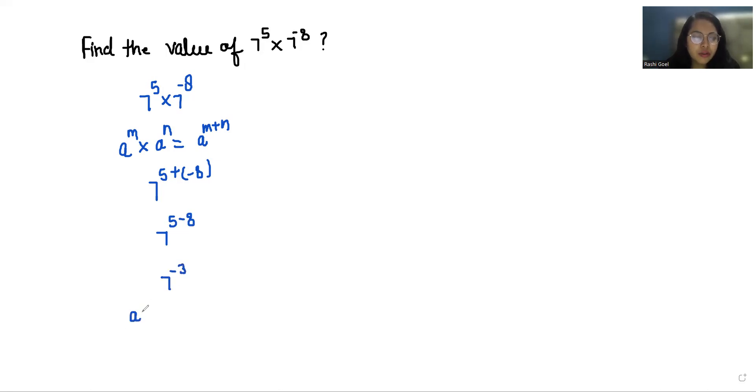Now according to exponent rule, a power minus m we can write it as 1 by a power m, so it becomes 1 by 7 power 3.